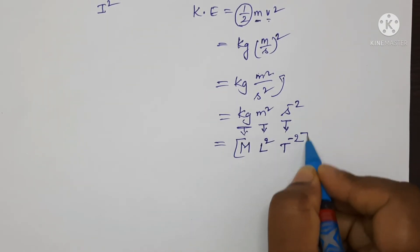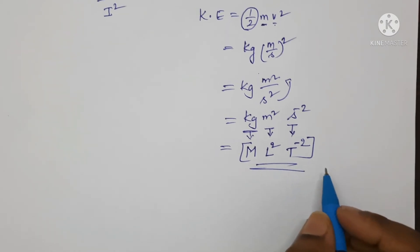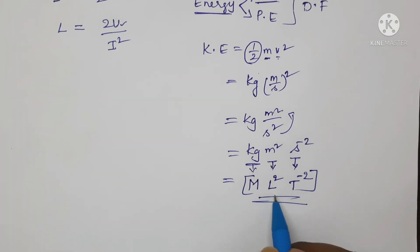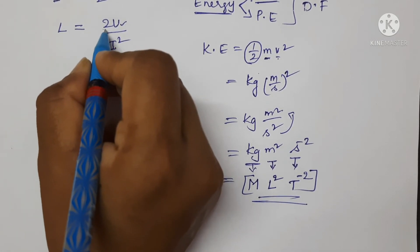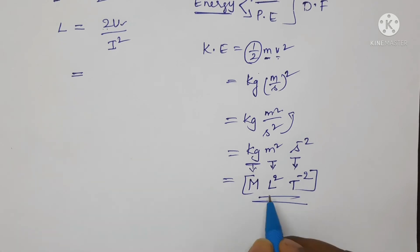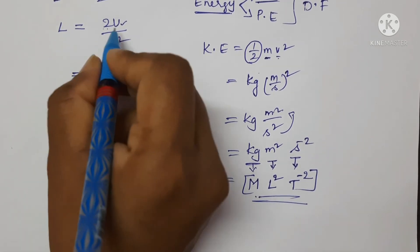Now I am replacing U with this dimensional formula. So which is equal to, here 2 is a constant and has no dimensions, now write the dimensional formula for energy.